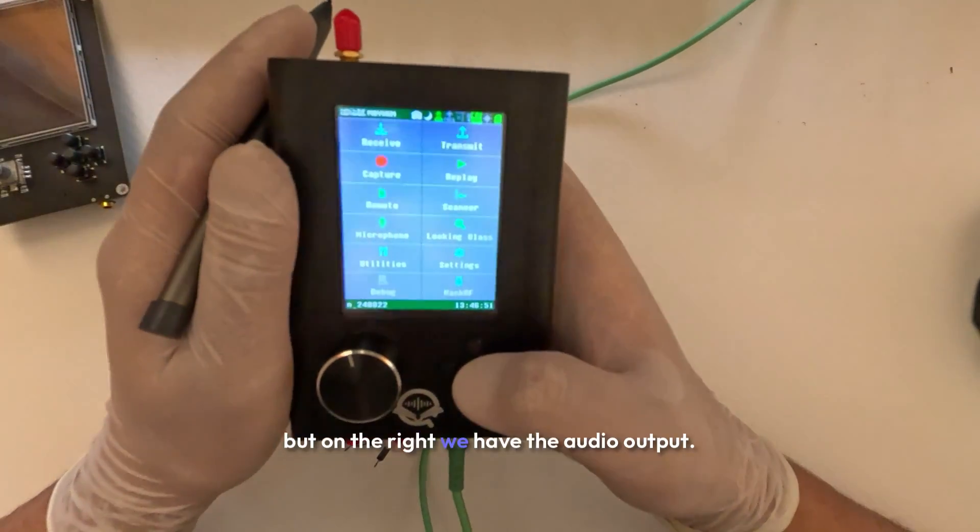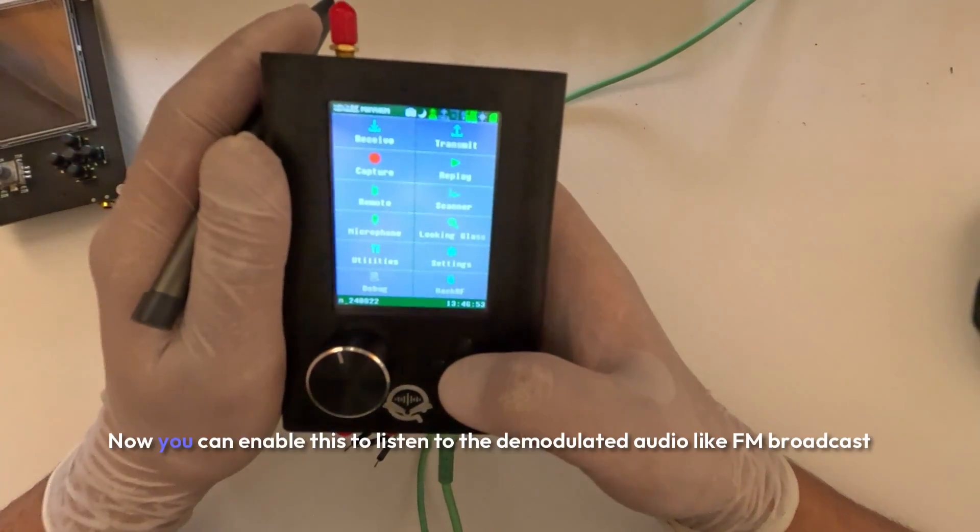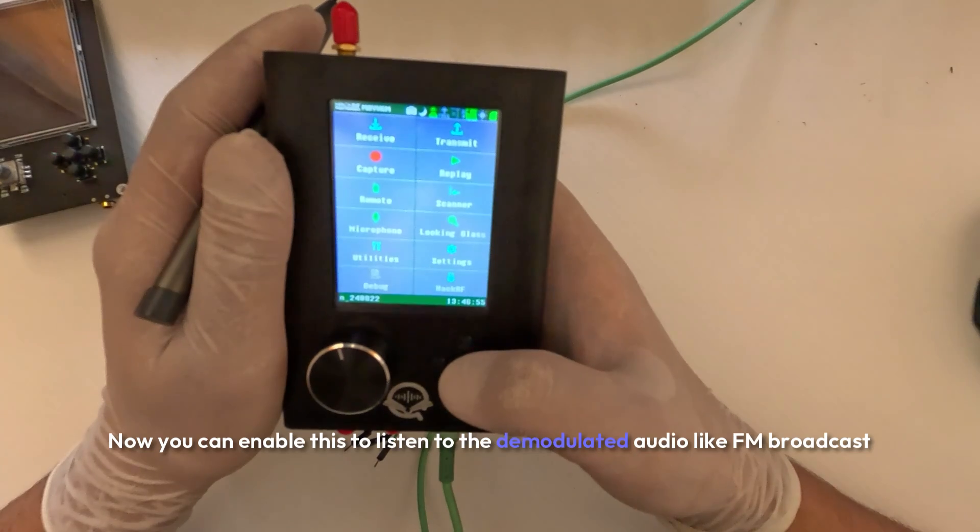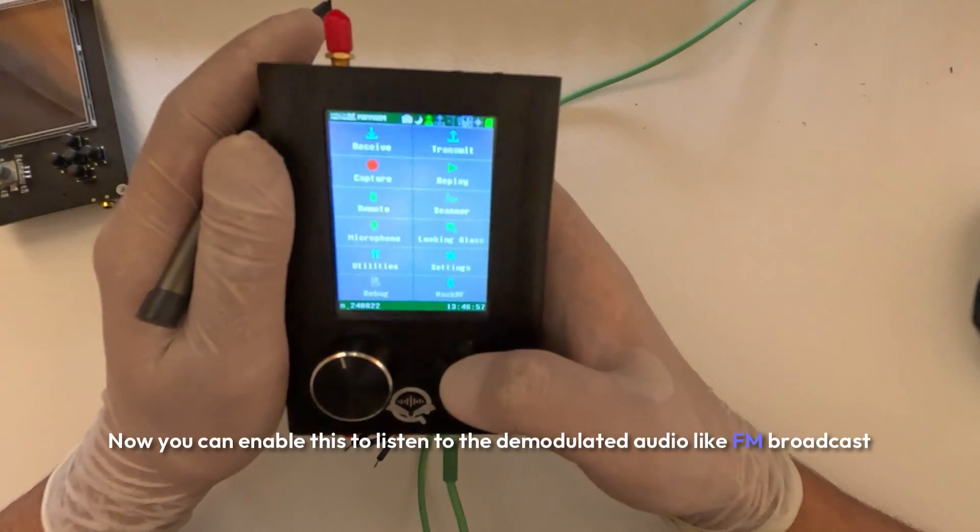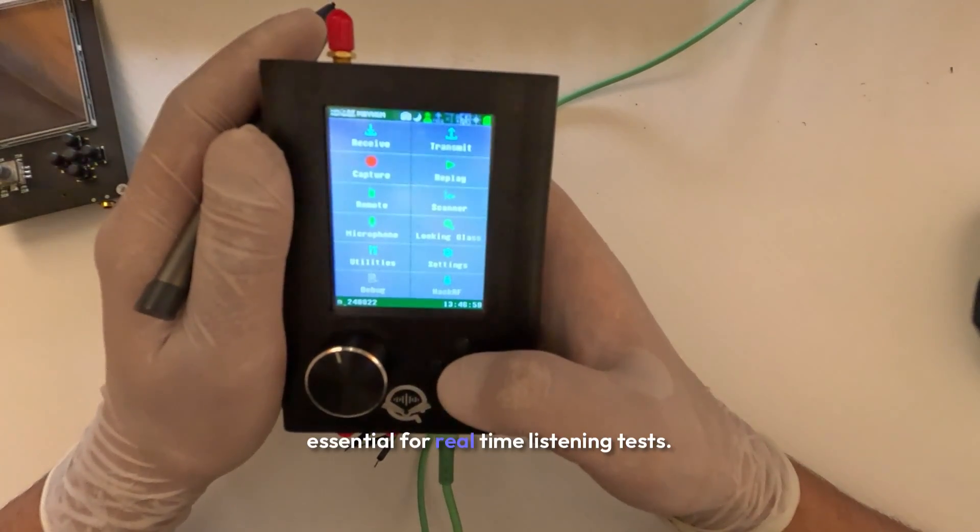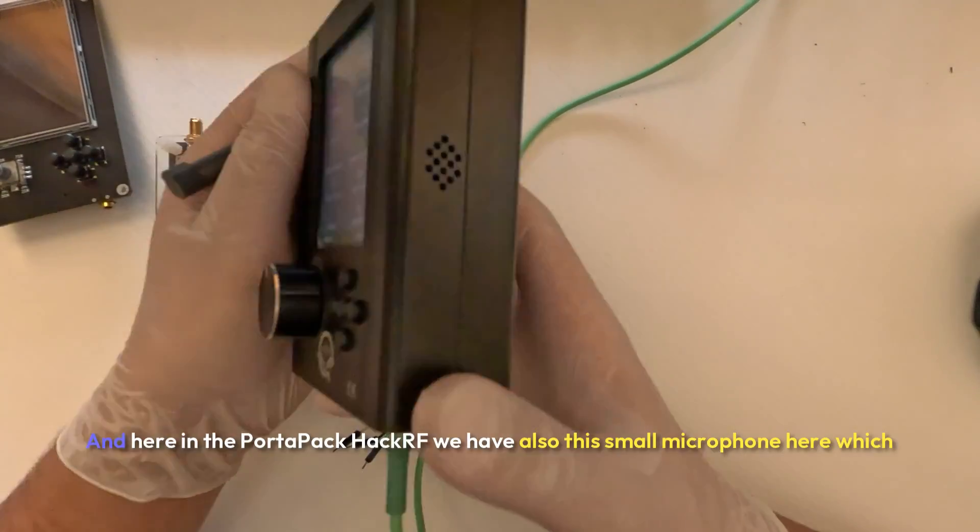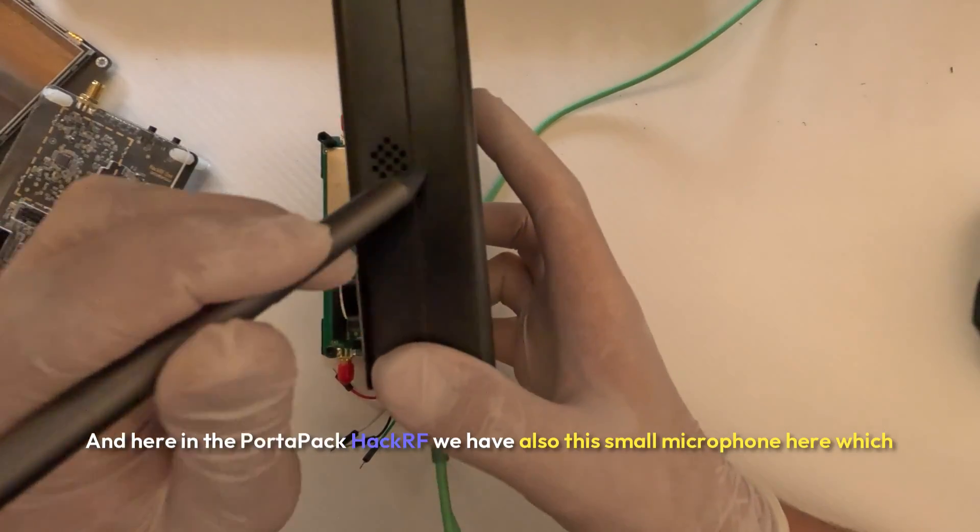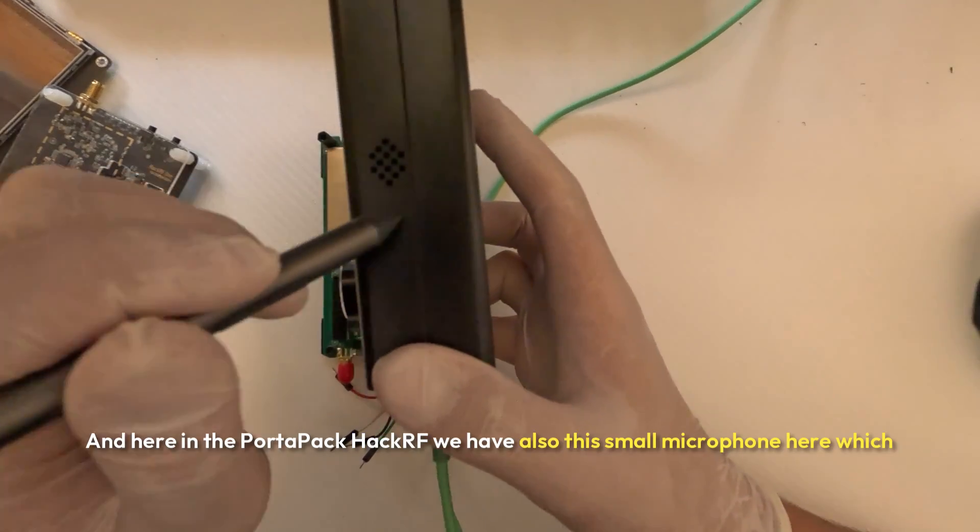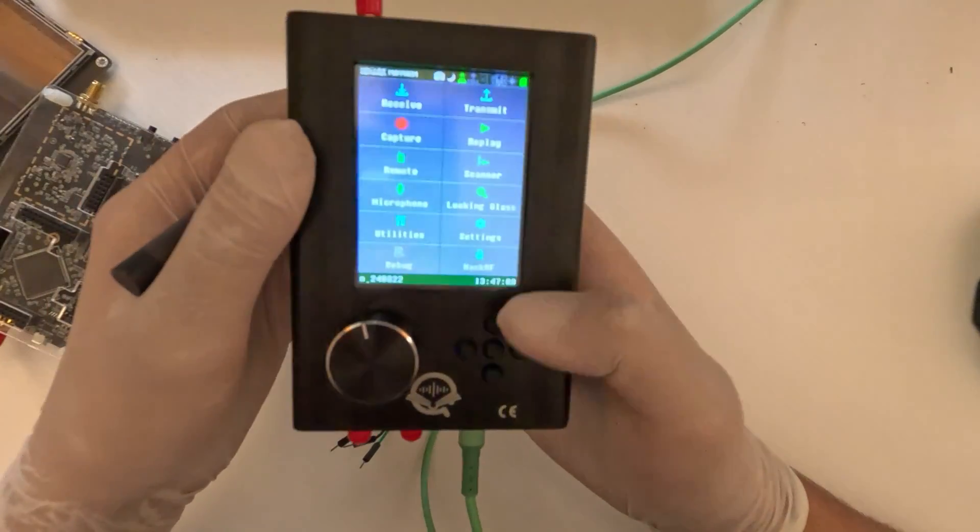But on the right we have the audio output. You can enable this to listen to the demodulated audio like FM broadcast. Essential for real time listening tests. And here in the Portapack HackRF we have also this small microphone here which works fine.